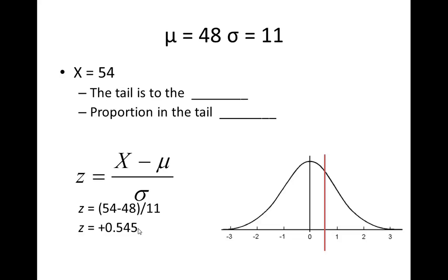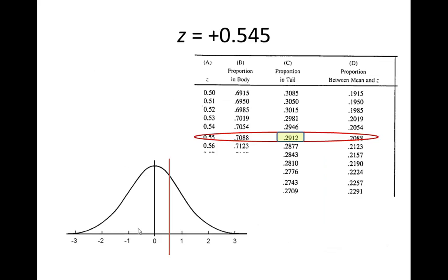Now, how do we determine what proportion that is? We go back to our table and round the z-score up to 0.55. We want to know what's in the tail, and that is .2912 — so about 29% of the overall distribution is in the tail.